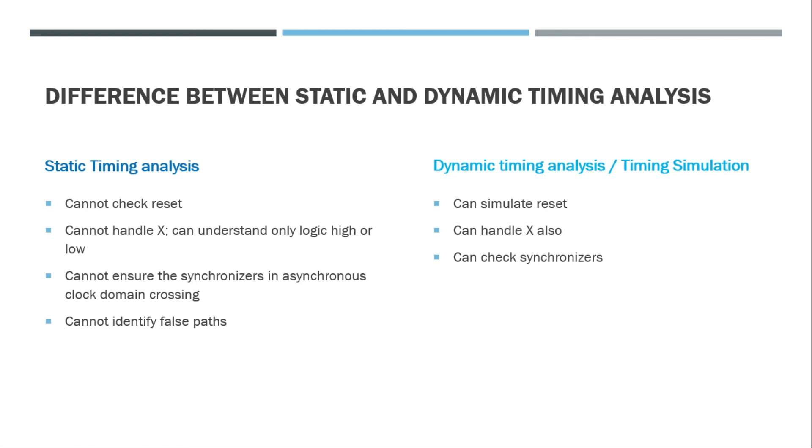So these cases are specified as constraints in the SDC file in order to avoid these cases. So false path is one condition and multi-cycle path is another condition. These are called timing exceptions. And the dynamic timing analysis can handle these false paths.